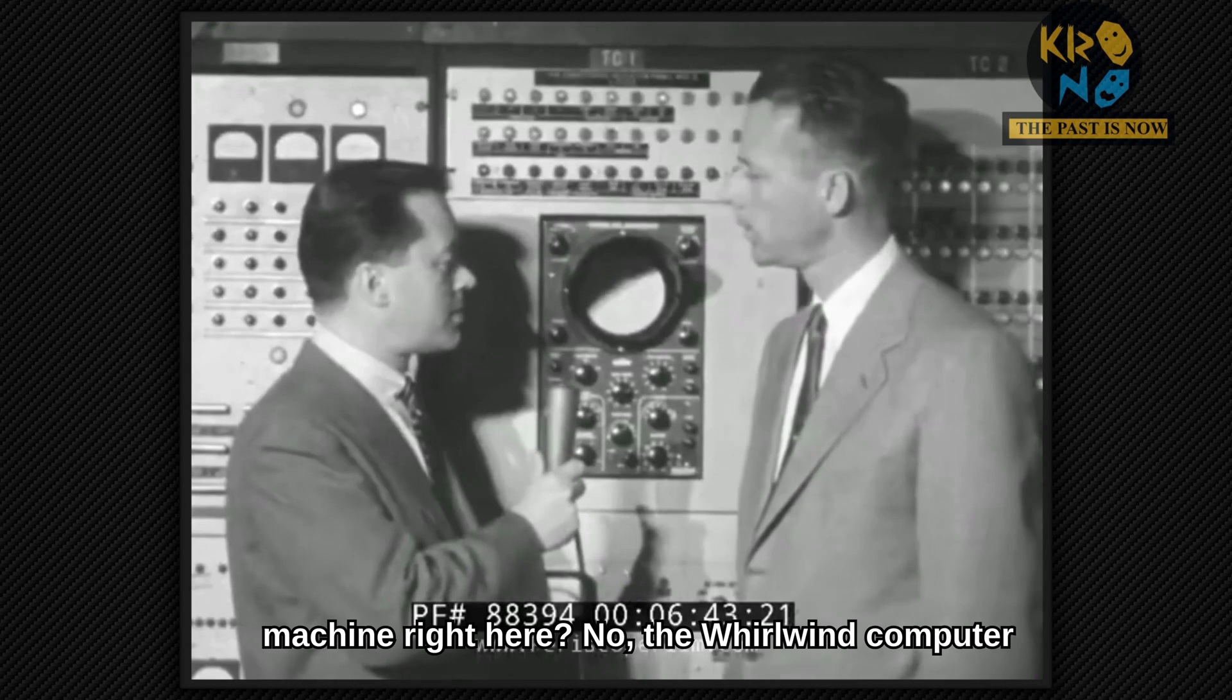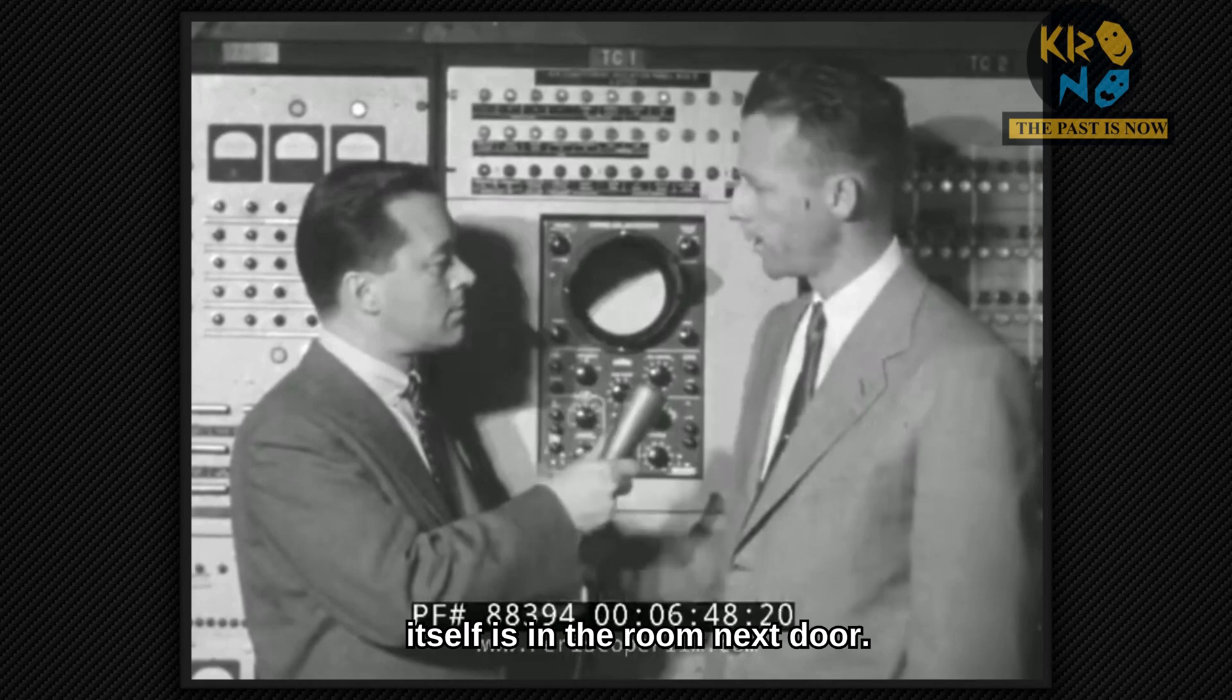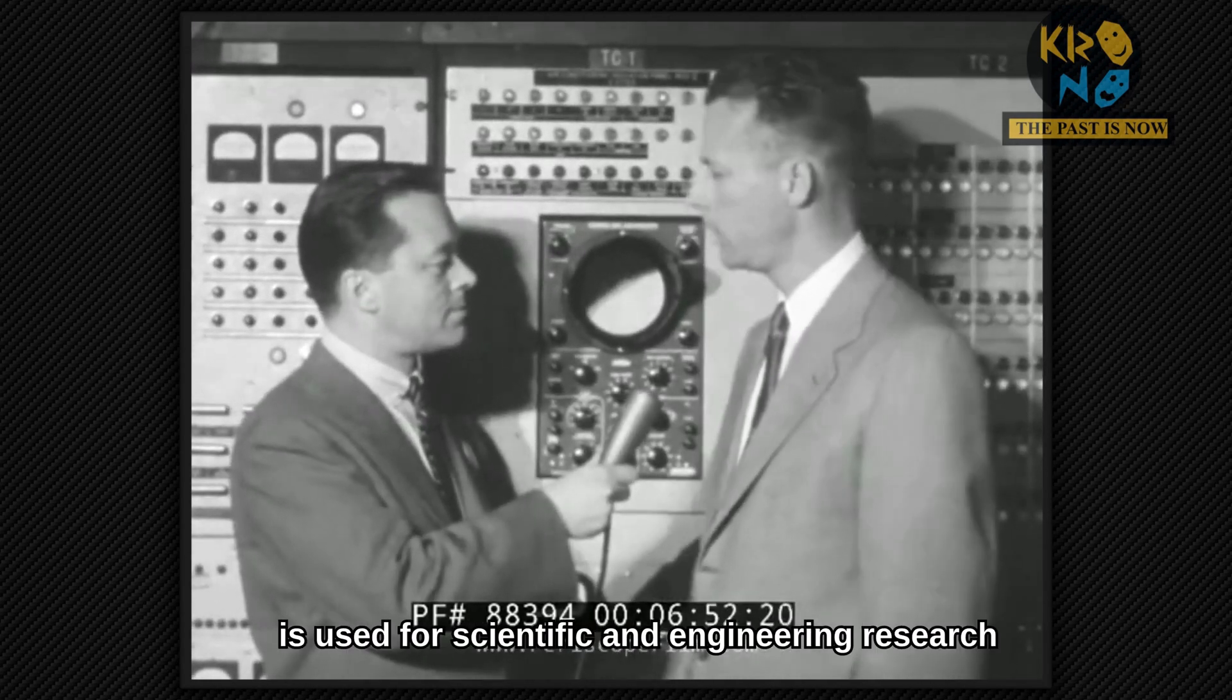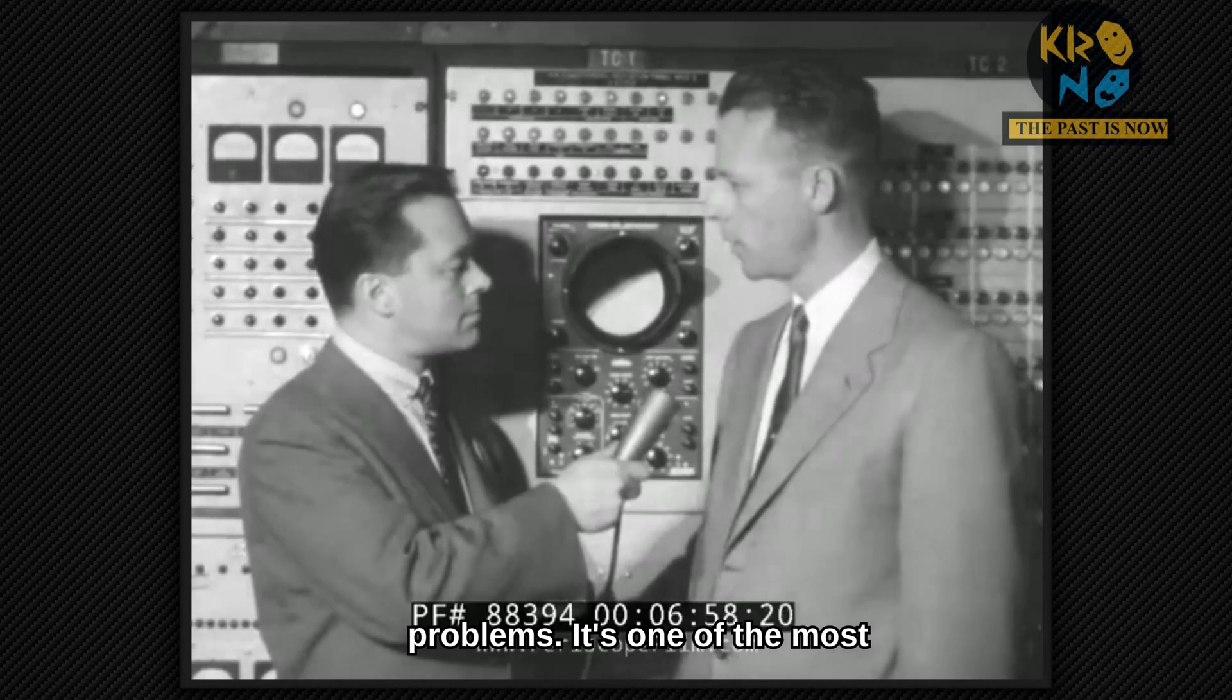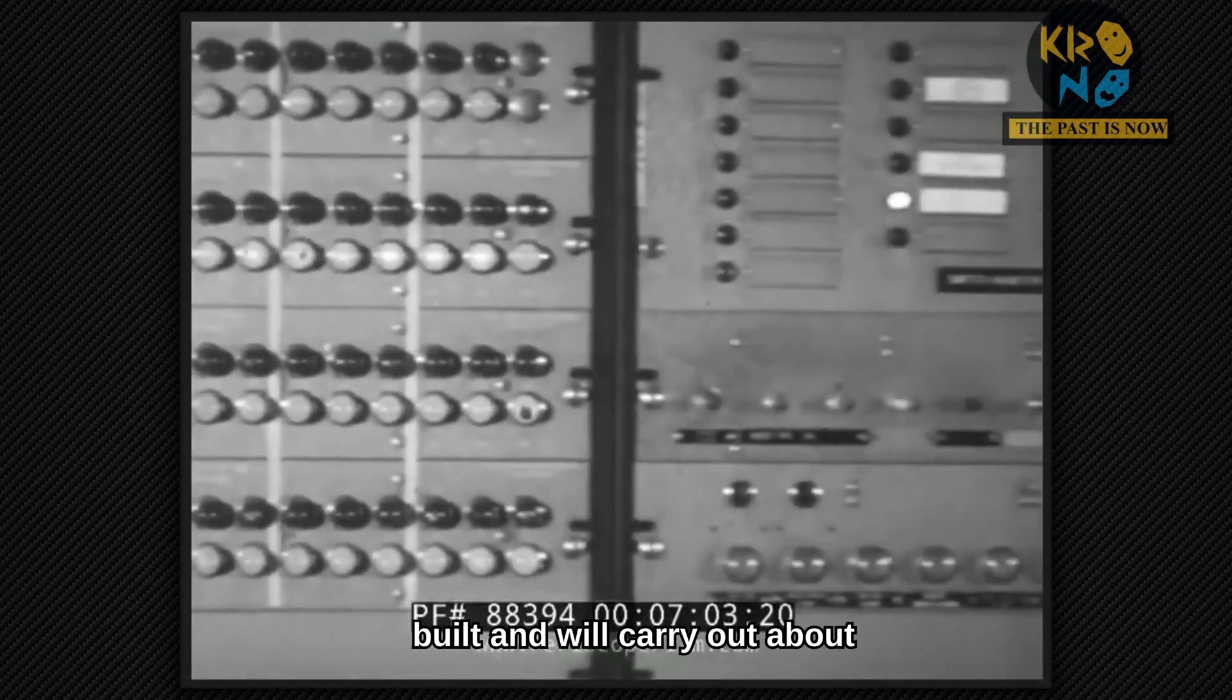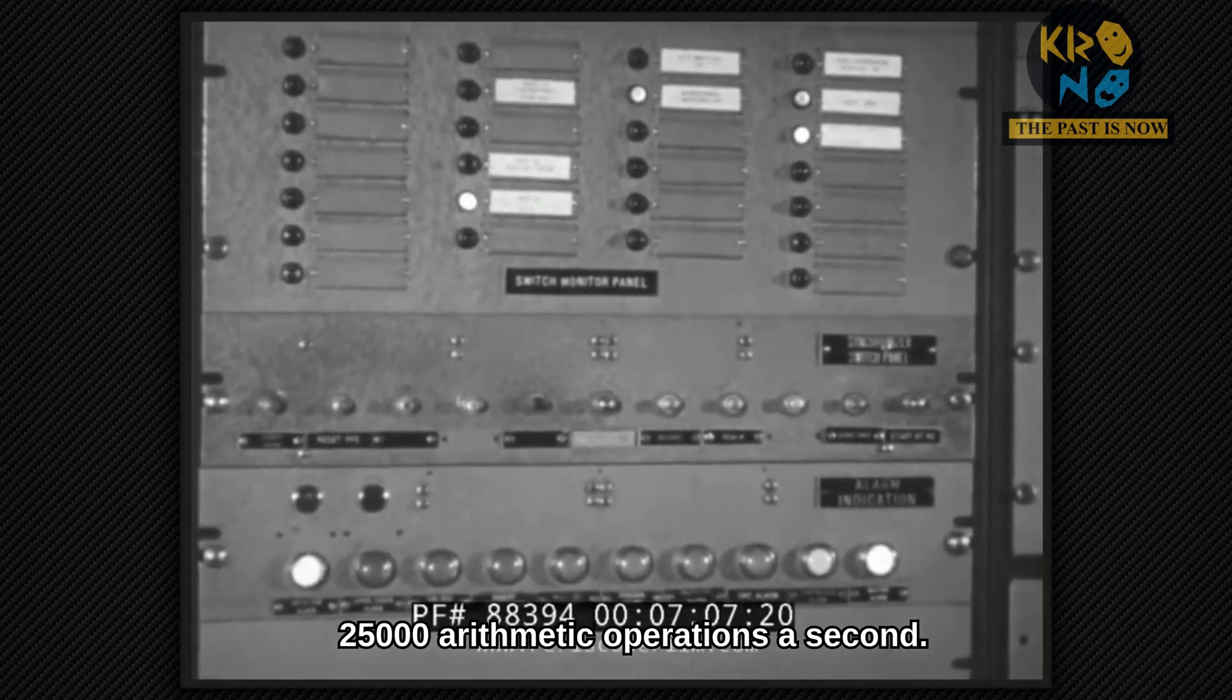Is this the entire machine right here? No, the Whirlwind Computer itself is in the room next door. What's Whirlwind used for? Whirlwind is used for scientific and engineering research and for studies on various military problems. It's one of the most versatile and fastest machines that's been built and will carry out about 25,000 arithmetic operations a second.